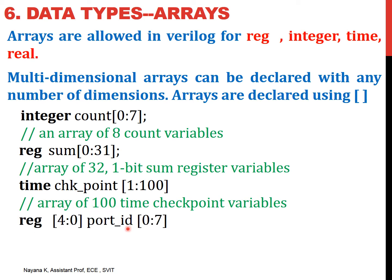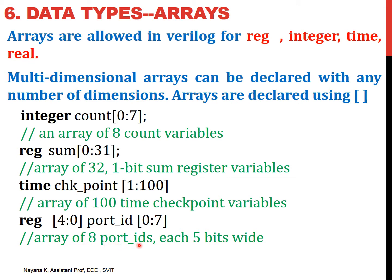Now: register port_id. Port_id is the name of the array. We have square brackets on both the left-hand side and the right-hand side. Port_id is declared as an array because the square bracket appears after the name of the variable. 0 to 7 indicates port_id has 8 elements in the array. The numbering on the left-hand side tells you each element is of type register which is a 5-bit number — 4 to 0 means totally 5 bits. This declares an array of 8 port_ids, each 5 bits wide.